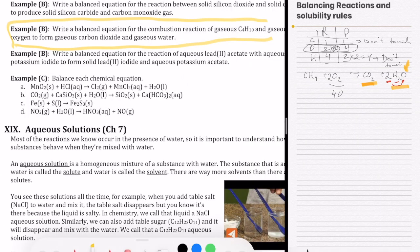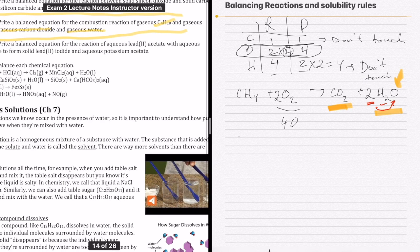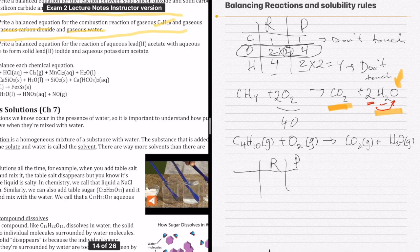Let me do another example on balancing. A lot of times they don't give you the actual equation but the names. This one says you have a combustion reaction between gaseous C4H10 and oxygen to form gaseous carbon dioxide and gaseous water. We have C4H10 gas reacts with oxygen gas to form CO2 gas and water gas. That's your unbalanced equation.